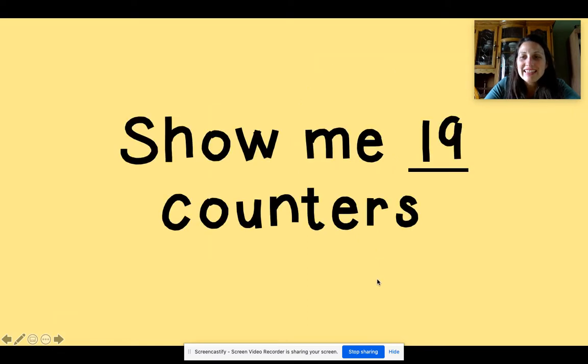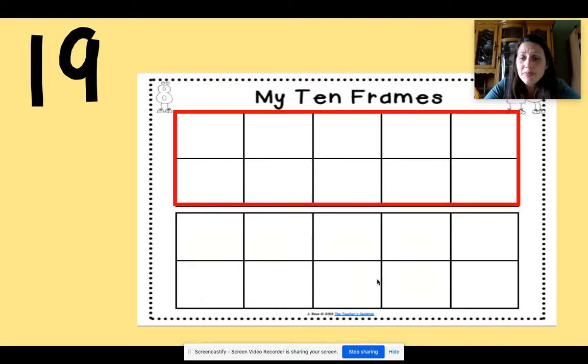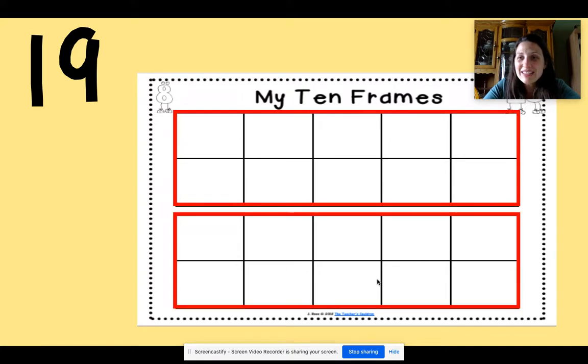Okay, let's take a look at 19 counters so we can understand how many is 19. In order to show you the 19 counters, we're going to use two tens frames. One wouldn't be enough. We need two to show 19 counters. So here's my first tens frame and my second tens frame. Now we can add in the counters. Let's start counting together.